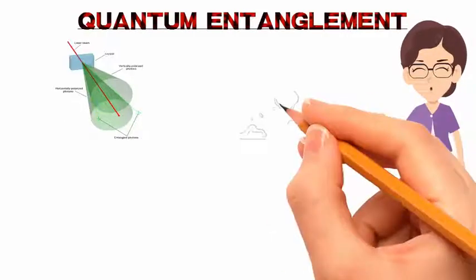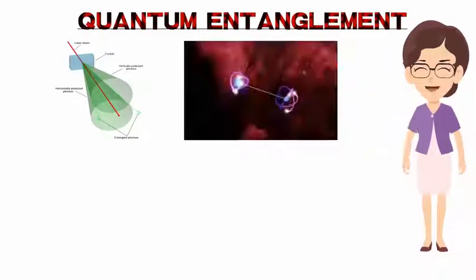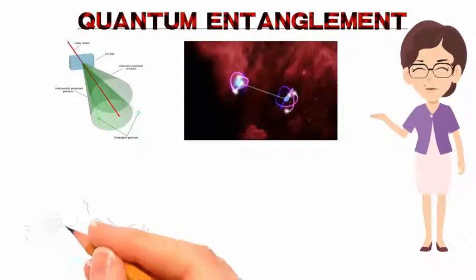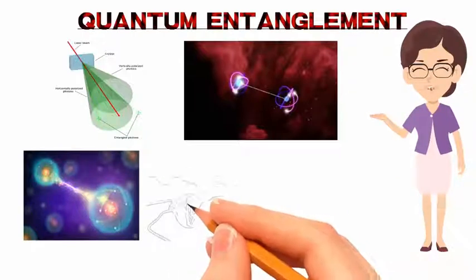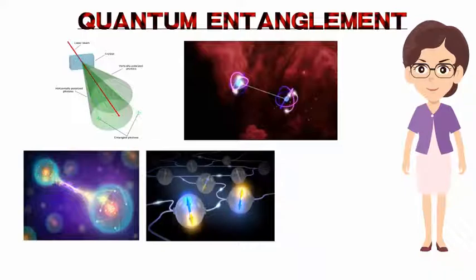For example, if a pair of particles is generated in such a way that their total spin is known to be zero and one particle is found to have clockwise spin on a certain axis, the spin of the other particle, measured on the same axis, will be found to be counterclockwise as is to be expected due to their entanglement.